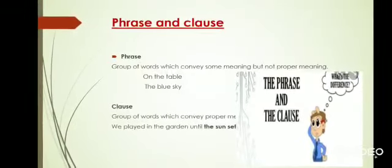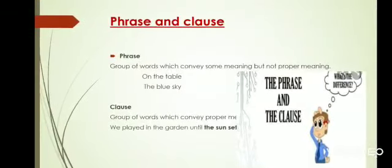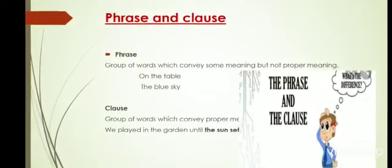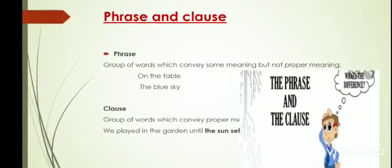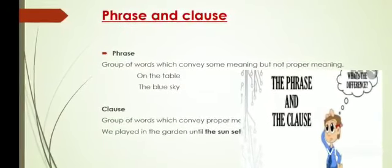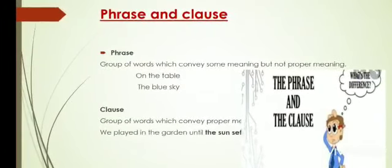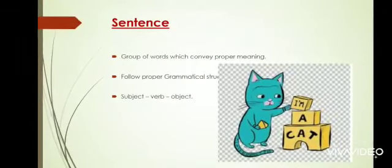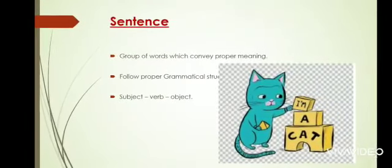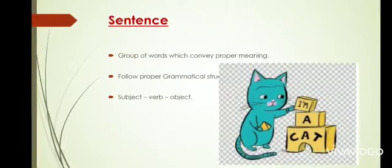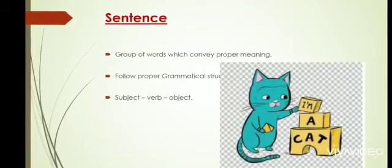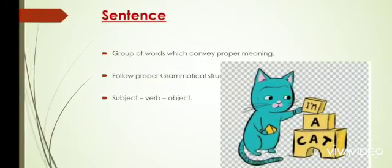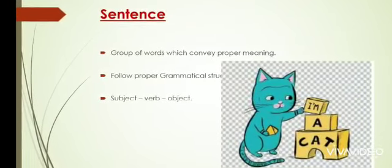Now you may wonder what is meant by a predicate. A predicate is basically the main verb. For example, 'I am going to voice place' — 'voice' is the subject and the predicate is the verb part. Now we will discuss what a sentence is: a group of words that conveys proper meaning is called a sentence.